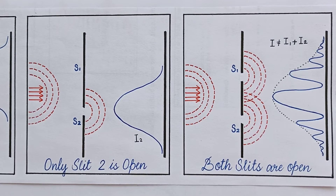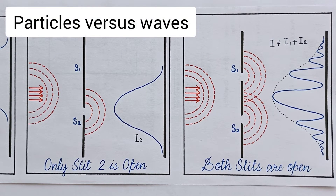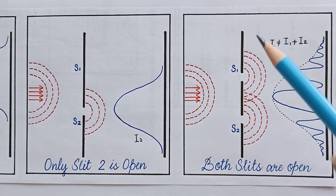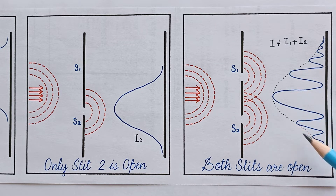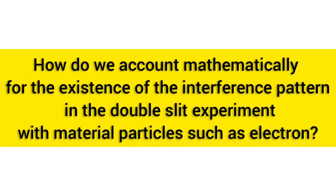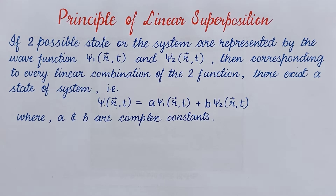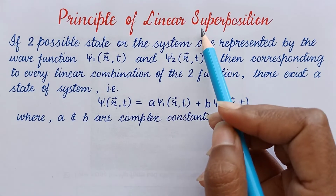In the second last video, that is 'Particles versus Waves', we saw the wave nature of the electron through the double slit experiment forming an interference pattern. Now the question arises: how do we account mathematically for the existence of the interference pattern in the double slit experiment with material particles such as electrons? The concept that offered us a mathematical answer to this question is the principle of linear superposition.